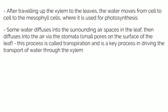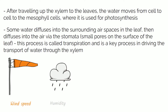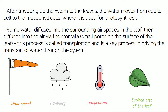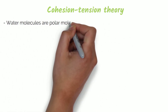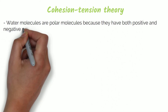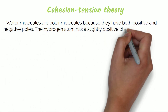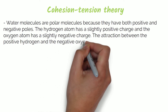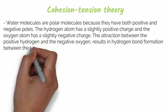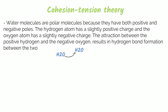The rate of transpiration depends on key environmental conditions such as wind speed, humidity, temperature and surface area of the leaf. The most widely accepted theory to explain the movement of water upwards in the xylem against the force of gravity is called the cohesion-tension theory. Water molecules are polar molecules because they have both positive and negative poles. The hydrogen atom has a slightly positive charge and the oxygen atom has a slightly negative charge. The attraction between the positive hydrogen and negative oxygen results in hydrogen bond formation between the hydrogen of one water molecule and the oxygen of another. This attractive force is known as cohesion and results in surface tension in water.